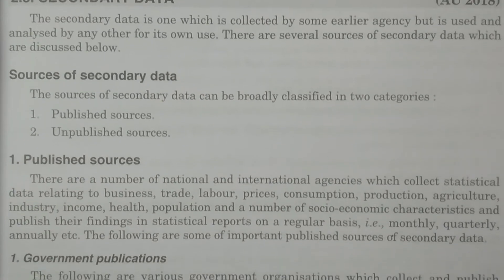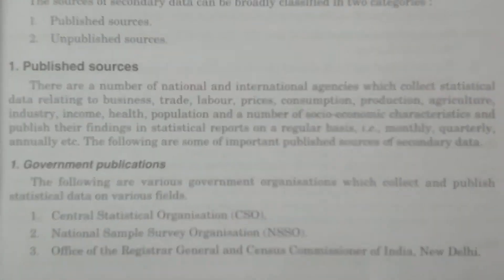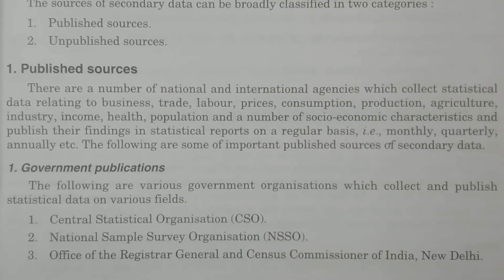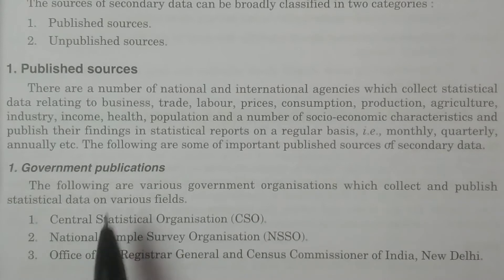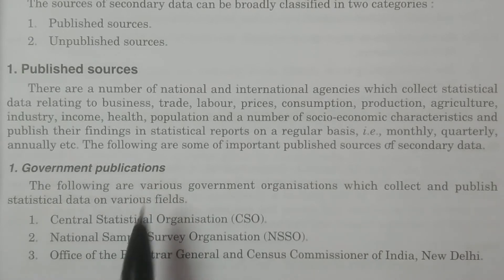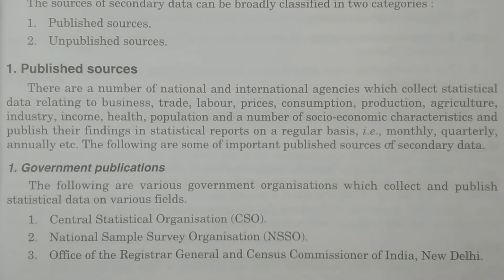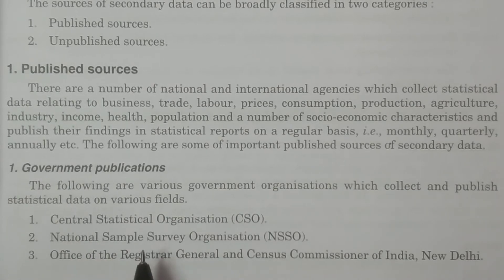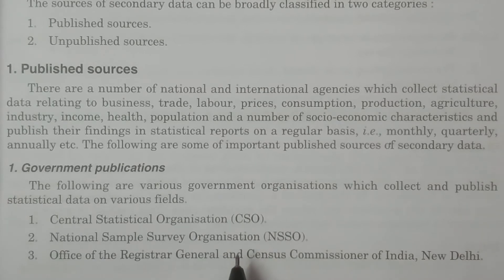Now anybody can use this particular data. In the published sources, we have some important sources of published secondary data: government publications, official and semi-official publications, and private publications. What are the government publications? Usually in our country, the Government of India has organizations that collect data for regular purposes and publish it in various fields.